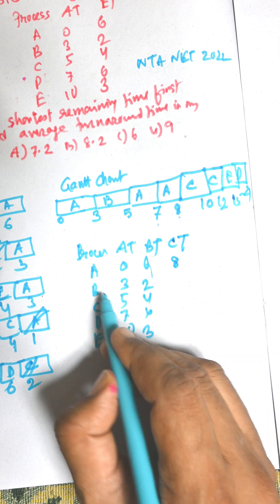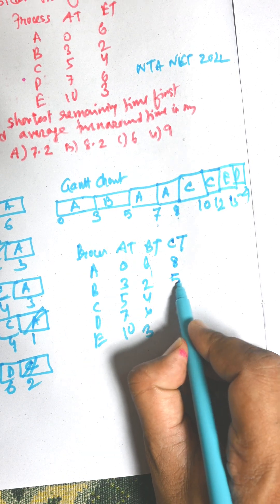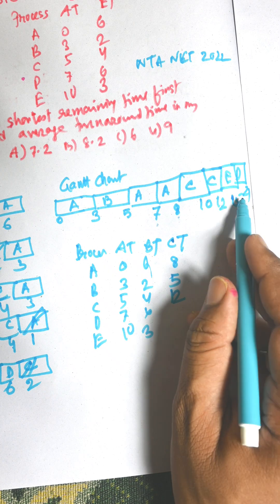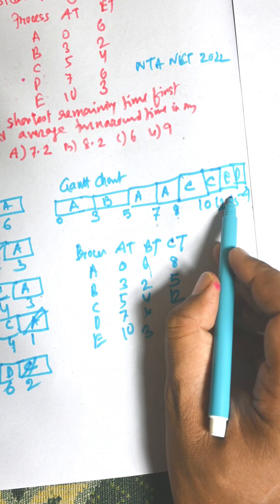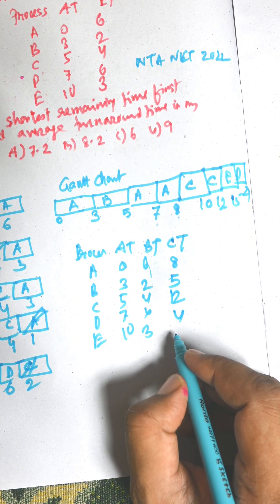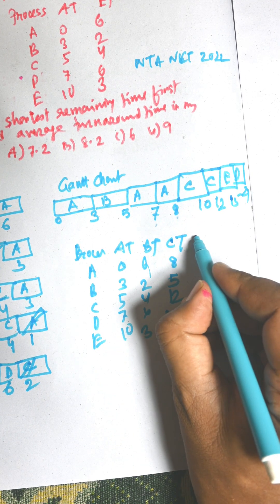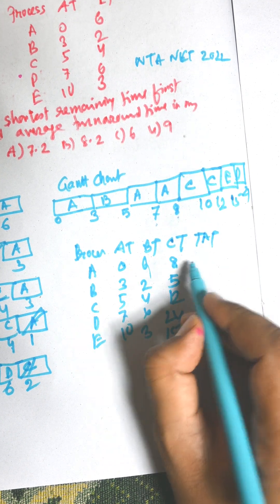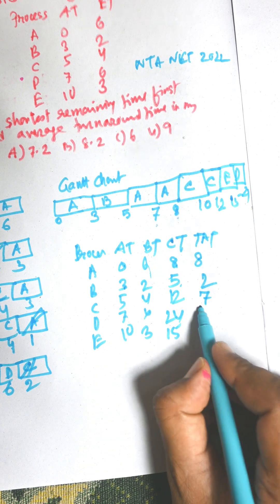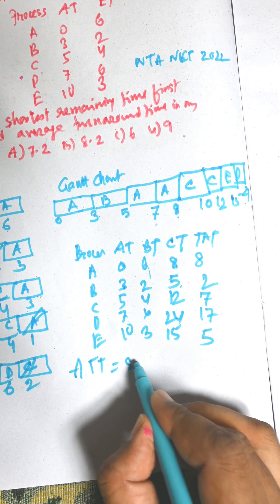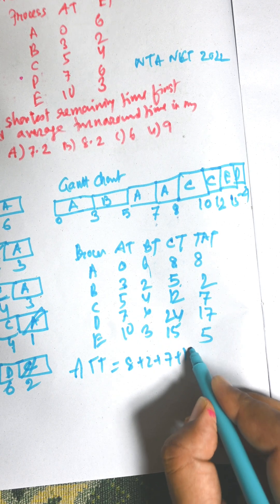Completion time of A is 8, B is 5, C is 12, D is 21, and E is 15. And now turnaround time. Turnaround time means completion time minus arrival time. 8 minus 0 is 8, 5 minus 3 is 2, 12 minus 5 is 7.